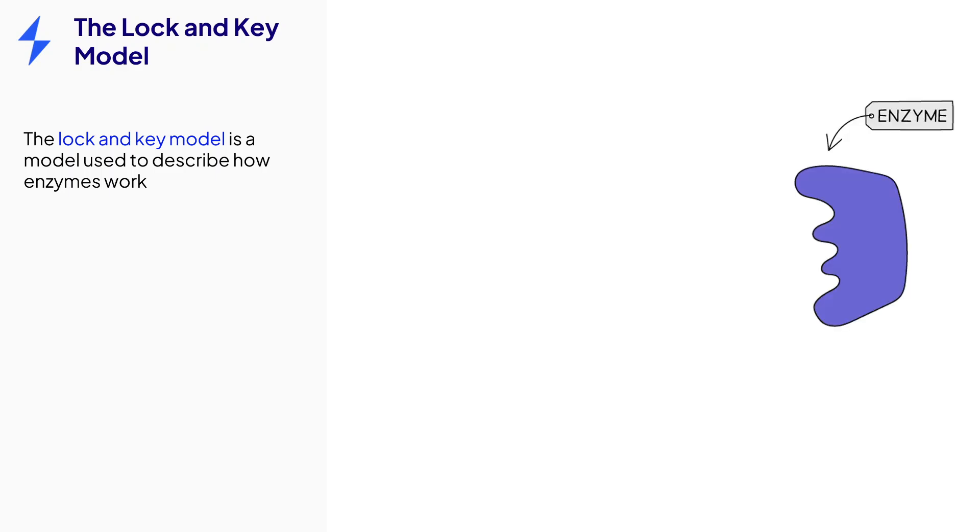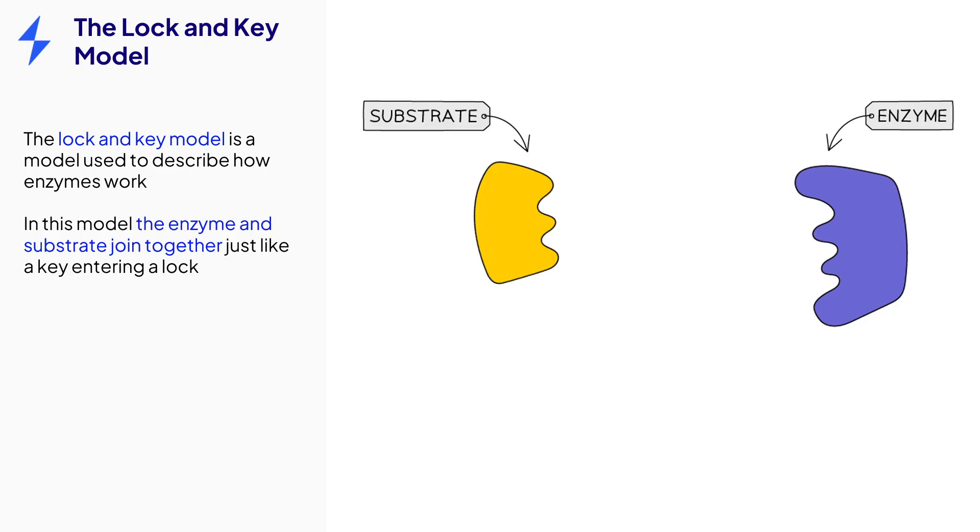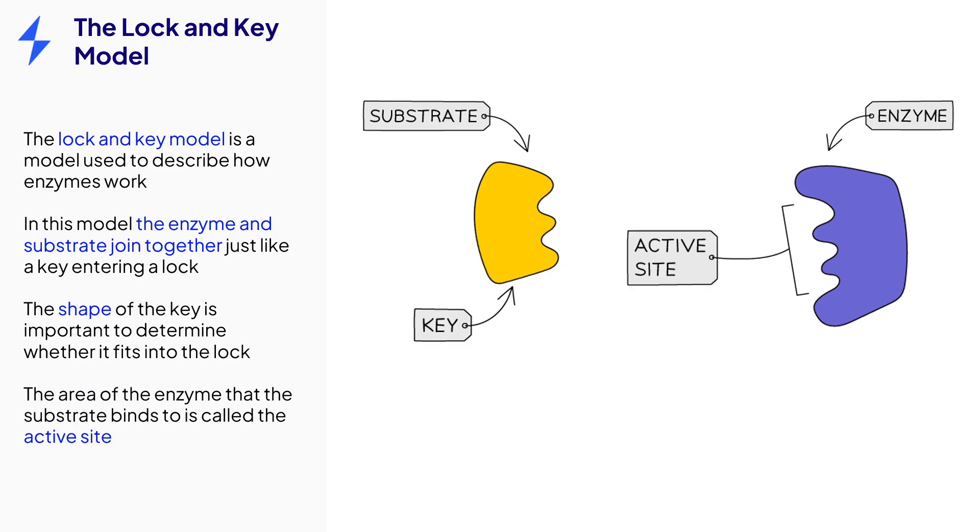The way that enzymes function can be described using the lock and key model. The reactant, called the substrate, is a specific shape, just like a key. This shape fits into the area of the enzyme called the active site, which acts like a lock by joining together with the key substrate. When this happens, the reaction occurs.